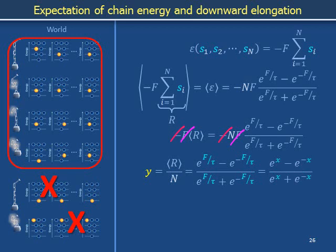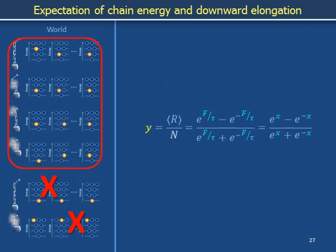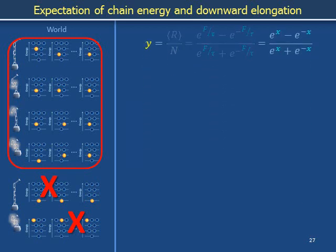To tidy up notation we refer to the normalized elongation as y and use x to refer to the ratio of the force capital F to the temperature tau. The ratio F over tau parametrizes the importance of energy transfer from the system to bath for increasing the number of ways in which the bath can be found. A bigger force F means a larger energy transfer to the bath when a link in the chain is lifted, meaning a greater multiplicative increase in the number of ways to find the bath arranged. A bigger temperature means, for a given energy transfer, less of an increase in the number of ways to find the bath. So y equals e to the x minus e to the minus x, over e to the x plus e to the minus x.